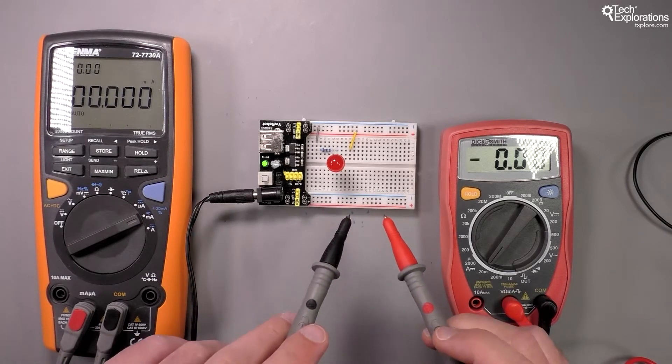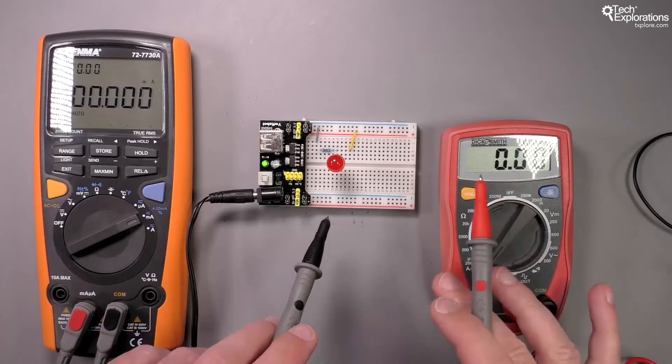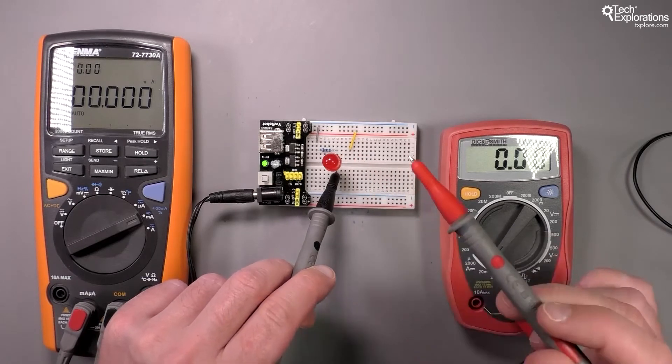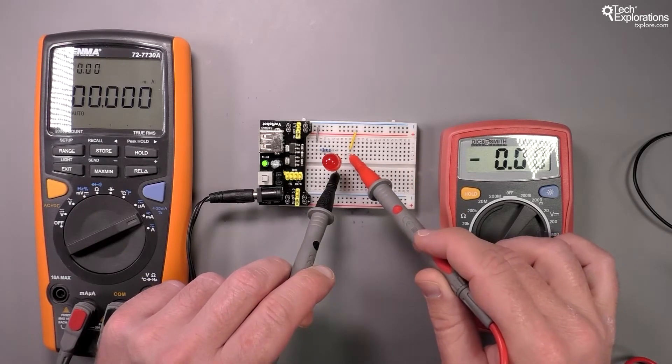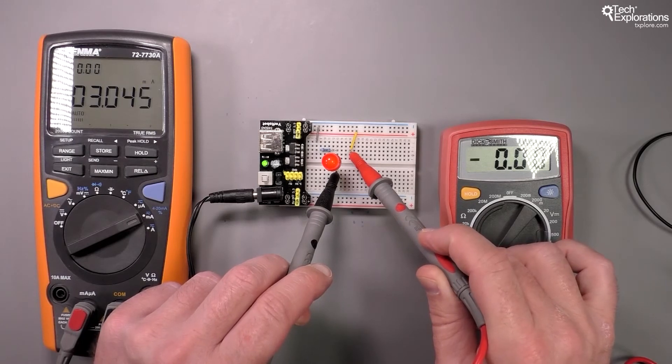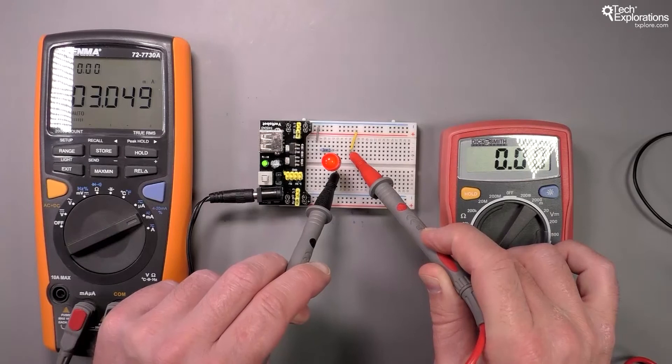I'm going to plug in my probes in the exact same way as I did for my cheaper multimeter. Black goes to the anode and red to the yellow jumper wire. You can see we now have a measurement: three milliamps is the current flowing through the LED.